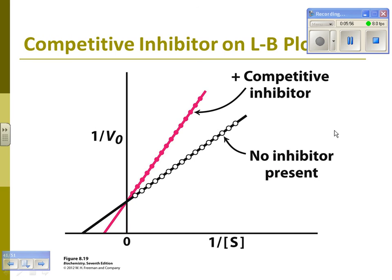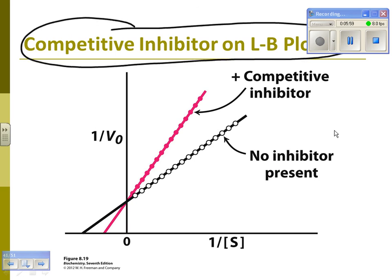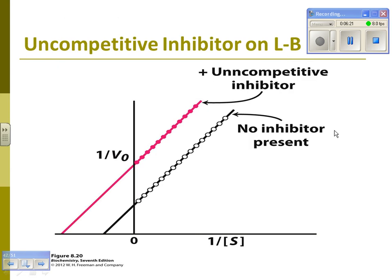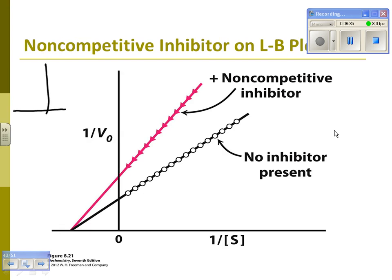For competitive inhibitors, know how to draw the Lineweaver-Burk graph: one line goes here and one line goes here — they intersect on the y-intercept. For uncompetitive inhibitors, know that the two lines are parallel. For non-competitive inhibitors, they have the same x-intercept — they start from the same point and then diverge. Be able to draw all three of those out.